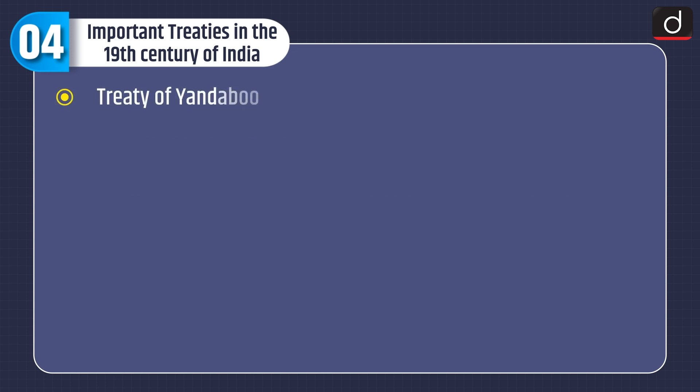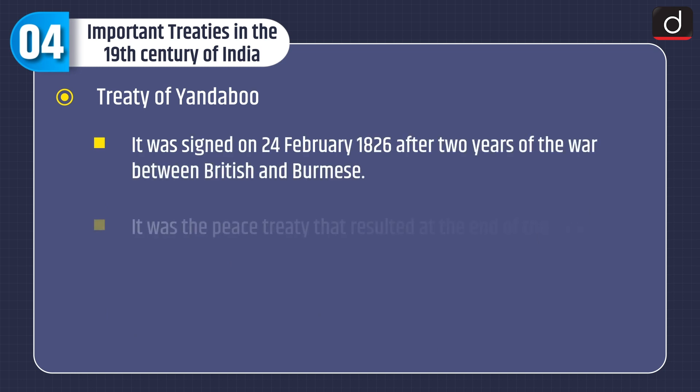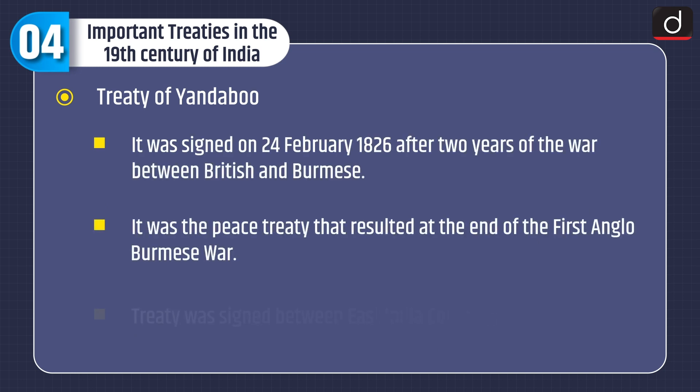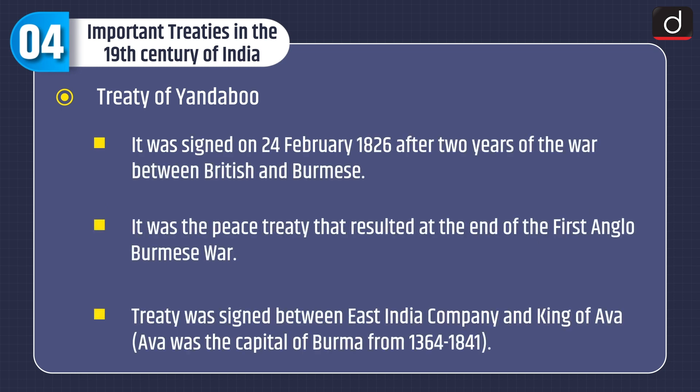Treaty of Yandabo. It was signed on 24 February 1826 after two years of war between the British and Burmese. It was the peace treaty that resulted at the end of the First Anglo-Burmese War. The treaty was signed between the East India Company and the King of Awa. Awa was the capital of Burma from 1364 to 1841.